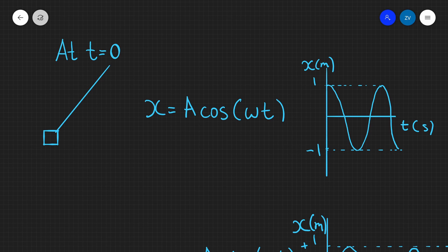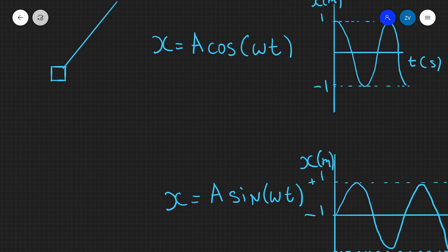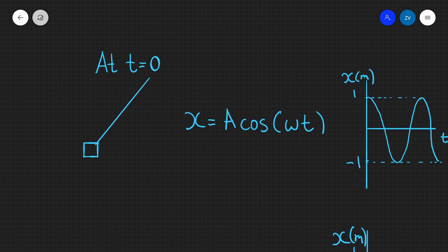Today we're going to be looking at the displacement equations in simple harmonic motion. There are two equations given in our formula booklet: x equals A cosine omega t and x equals A sine omega t. What we need to do is learn when to use which equation.